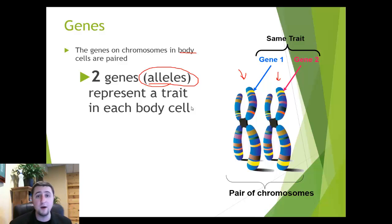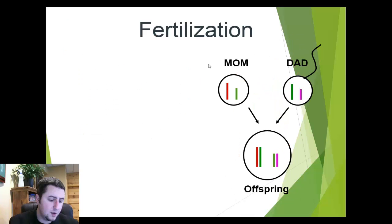So for example, I have brown eye color. So I have two genes or alleles that control my eye color. I get one from each parent. Now how did that all work? Well, it happened because of a process called fertilization. Let's review that.